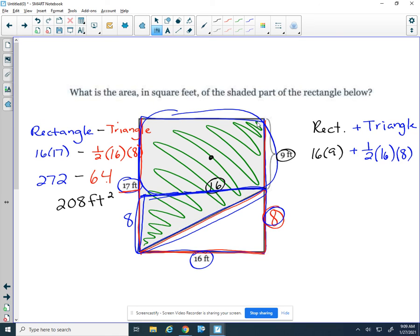So in this method, 16 times 9 is 144. One half of 16 times 8 is 64. And if I add these two together, I get 208 feet squared, which is the same answer as when I use that subtraction method—whole minus the triangle.